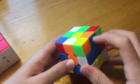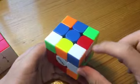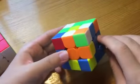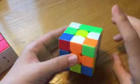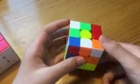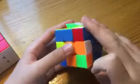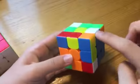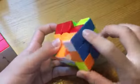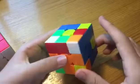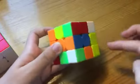First, aligning this edge to its corresponding center, inserting this red cross edge, doing a D to align these two, and now very crucially, not inserting this cross edge first, but inserting this cross edge first to set up this corner and this edge to be inserted together with this blue cross edge. And now we are left with a pseudo-pair because these two are solved, so insert that pseudo-pair into the back.